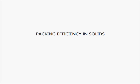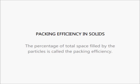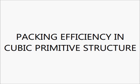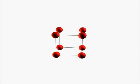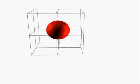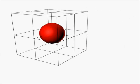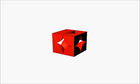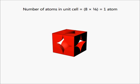Packing Efficiency in Solids. Packing Efficiency in Cubic Primitive Structure: The unit cell has 8 corner atoms. One corner atom is shared by 8 such unit cells, so they contribute 1/8th of their volume to the unit cell. This means 1 unit cell has 1 atom.